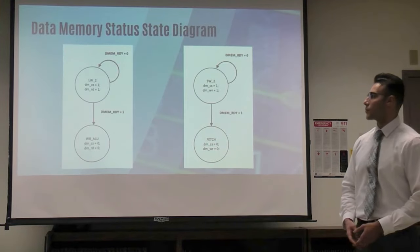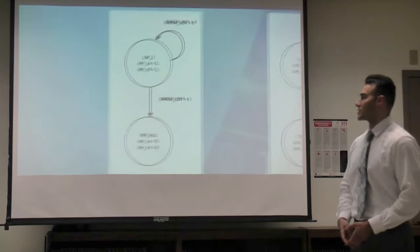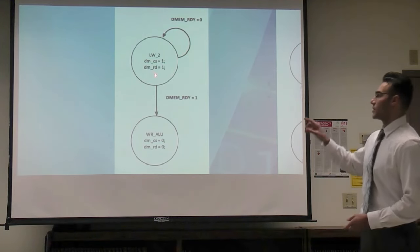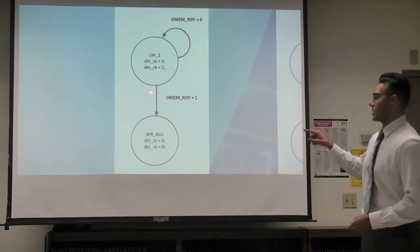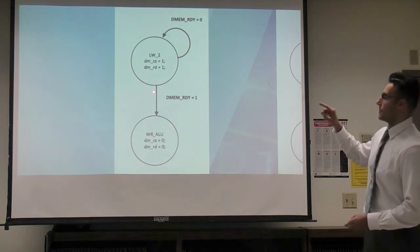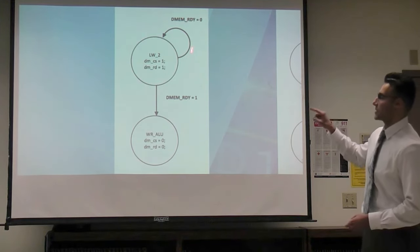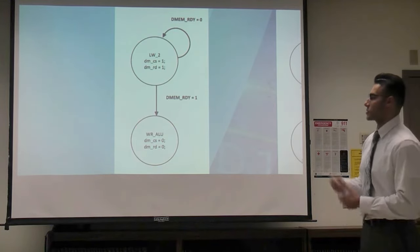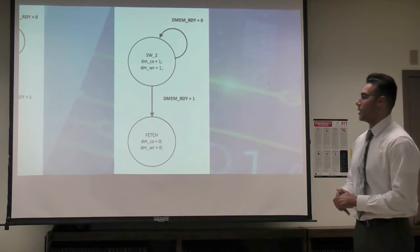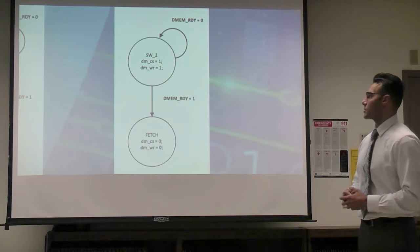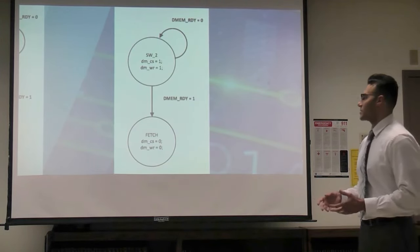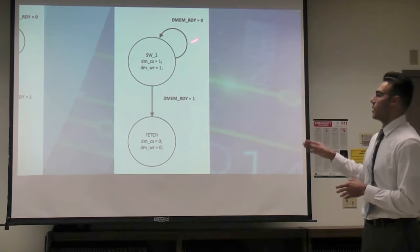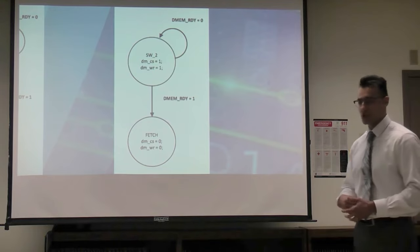These are the read and write states for data memory. In the read state, when the chip select and read enable are asserted but there's no read-ready signal from data memory, the processor will stay in that state until it receives the ready signal from data memory. Once it receives it, it will move on to the next state, which is writing back the data to a register. For the write state, same concept — it waits for the ready signal from data memory, and once received, goes back to the fetch state.